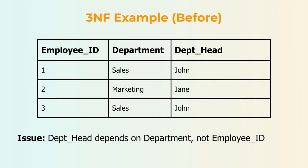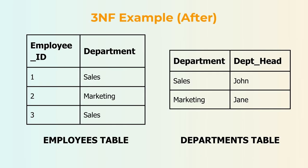In this example, we have a table with employee ID, department, and department head. The problem is that department head depends on department, not employee ID. This is a transitive dependency, because department head should really depend on employee ID, not just department. This setup could lead to issues if we ever change the department structure, or if there are multiple heads for one department. After applying 3NF, we split the data into two tables. One table has employee ID and department, and the other has department and department head. Now, department head is correctly tied to department in a separate table, and the transitive dependency is gone. This makes the data more reliable and ensures everything is connected properly.